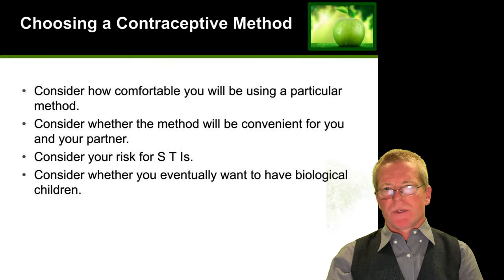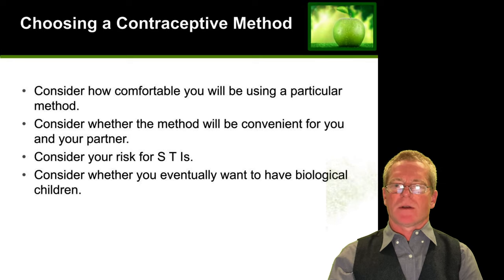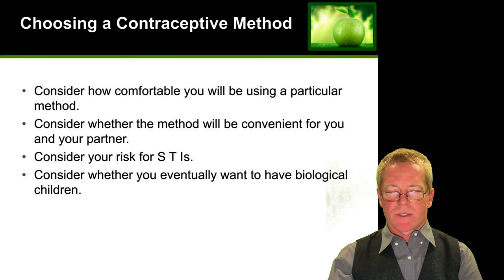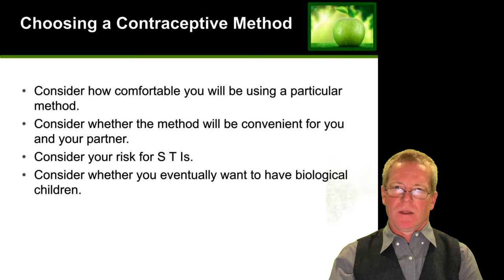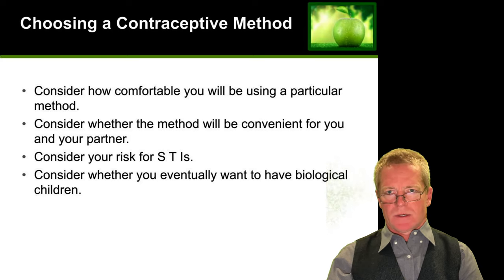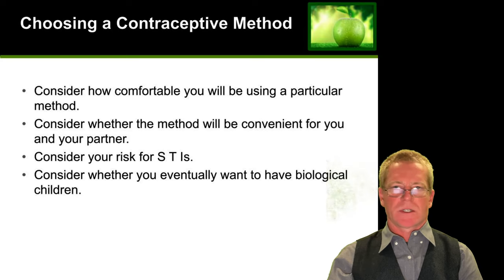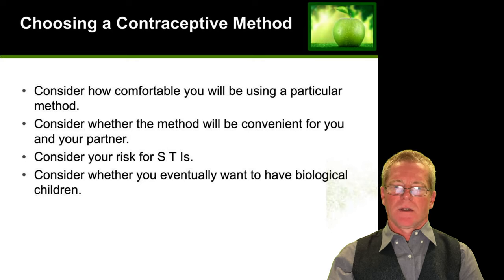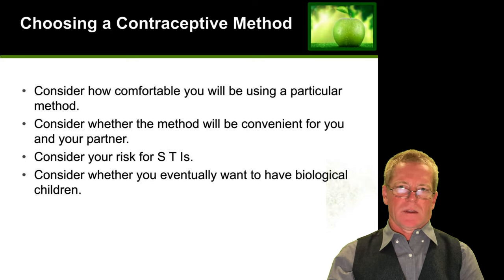When choosing a contraceptive method, consider how comfortable you are using a particular method — will you actually use it? Consider what's convenient for you and your partner, and consider your risk for sexually transmitted infections. Also consider whether you ever want to biologically have children, in which case permanent methods like vasectomy should not be chosen.